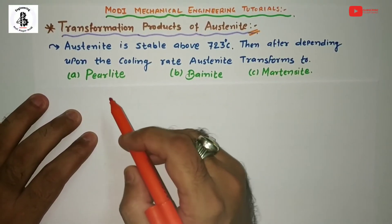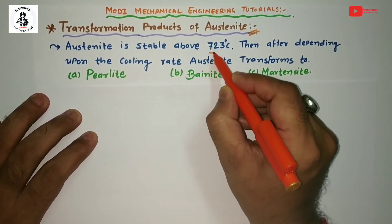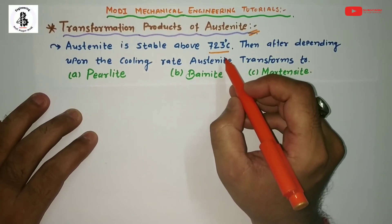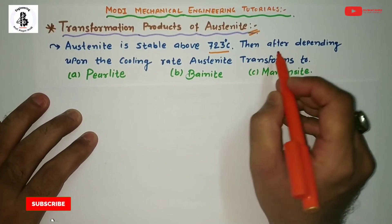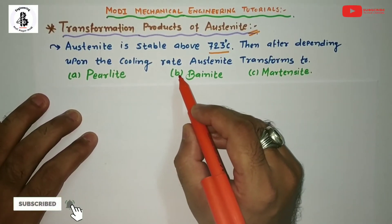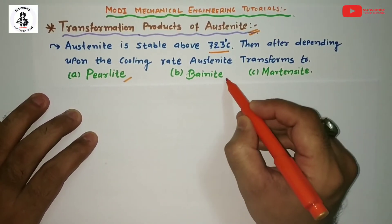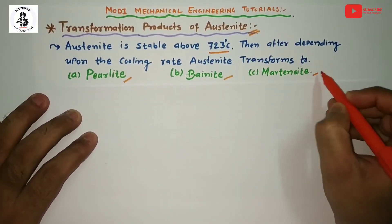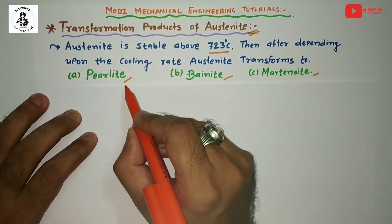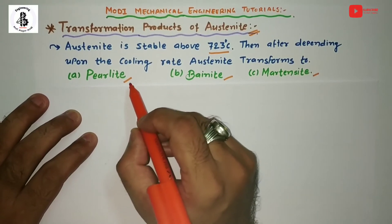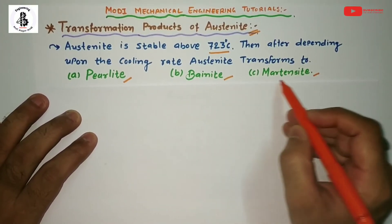In case of the transformation from austenite, above 723 degrees centigrade we all know that will be the stable austenite. Then depending upon various kinds of cooling rates, that austenite will be transformed to pearlite, bainite, and martensite. We already discussed that, but which process will be used to convert this stable austenite into pearlite, bainite, and martensite?